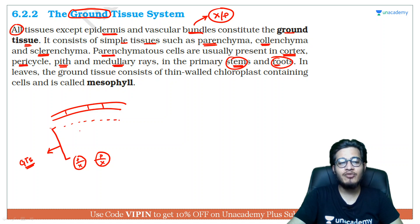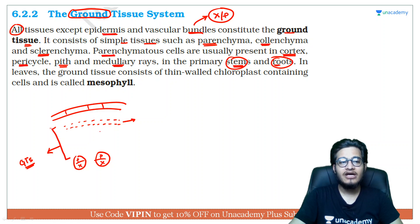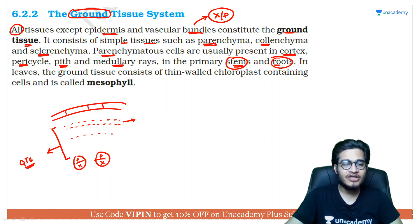In the root, during primary growth, from outside to inside we have the epidermis, hypodermis, cortex, pericycle, and the central part.